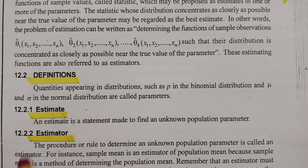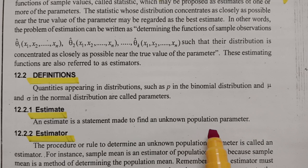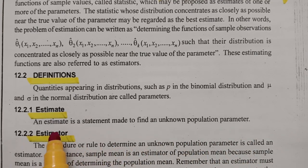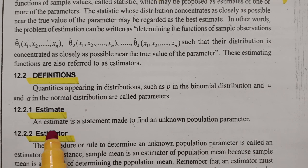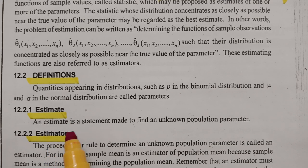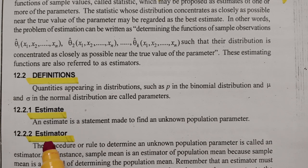What is an estimate? An estimate is a statement made to find an unknown population parameter. It is a guess — it is a prediction. For example, when you go to a cell phone shop and want to purchase a mobile phone, you first estimate the price. This guess or prediction of the price is nothing but the estimate. Similarly, the college estimated a few faculty members as lecturers — that is an estimate.